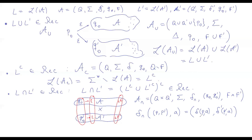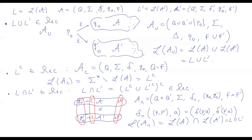Based on this argument — doing two computations in parallel and ending in a final state both in the first and in the second automaton — it's easy to conclude that the language of this automaton is exactly the language of A intersected with the language of A'. You accept only those input words that reach a final state on the first component and a final state on the second component. So the language is L intersected with L'.